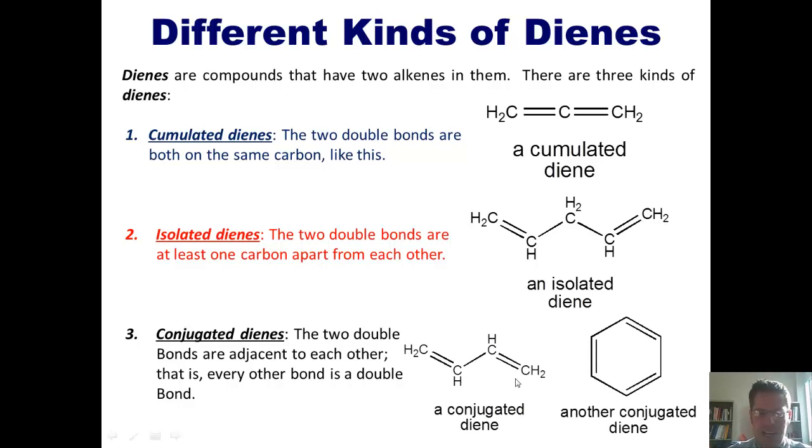A conjugated diene shown here and benzene, the ringed molecule that has every other bond going double, single, double, single. A very special conjugated diene we'll talk more about in chapters 15 and 16.